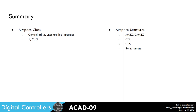To summarise, today we looked at airspace class and controlled versus uncontrolled airspace, and the different responsibilities of aircraft and controllers in Alpha, Charlie, and Golf airspace. We also had a look at some common airspace structures including MATs and CMATs, the control zones, control areas, some less important ones, and we looked at entering control zones and control areas. Thank you.